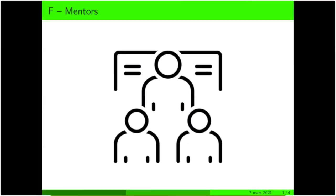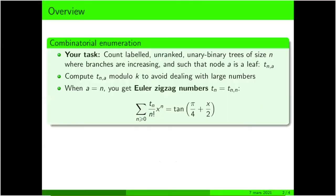I will now present to you the solution for problem F, Mentos. This is a problem of combinatorial enumeration, where you should count trees with two parameters, n and a.